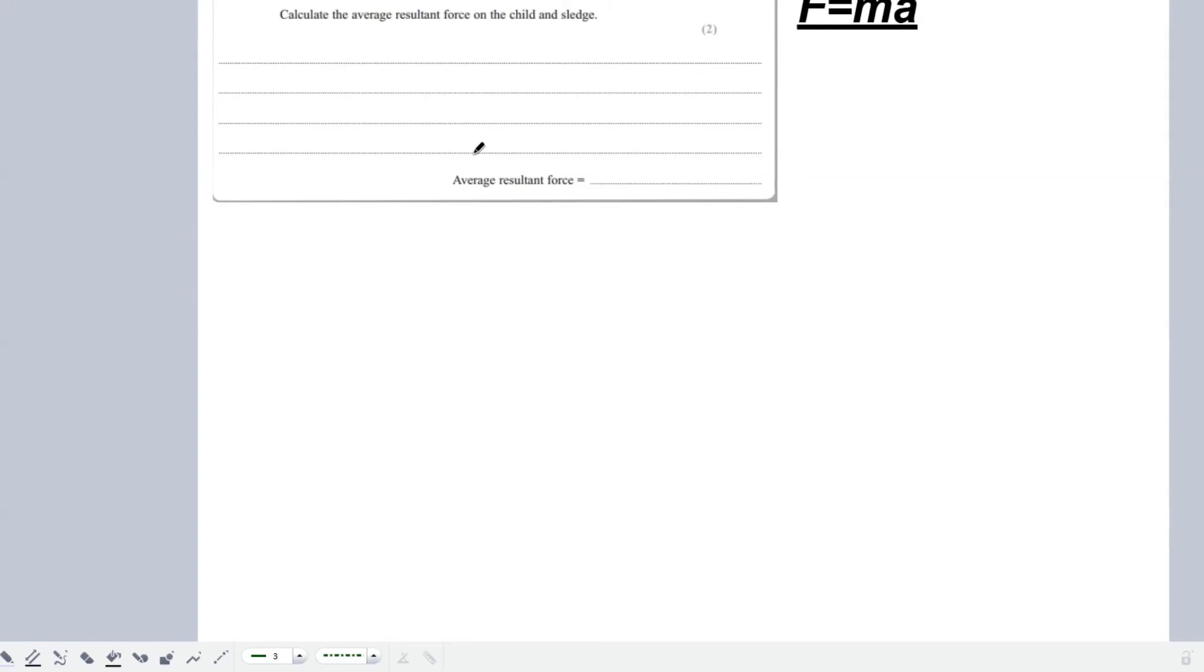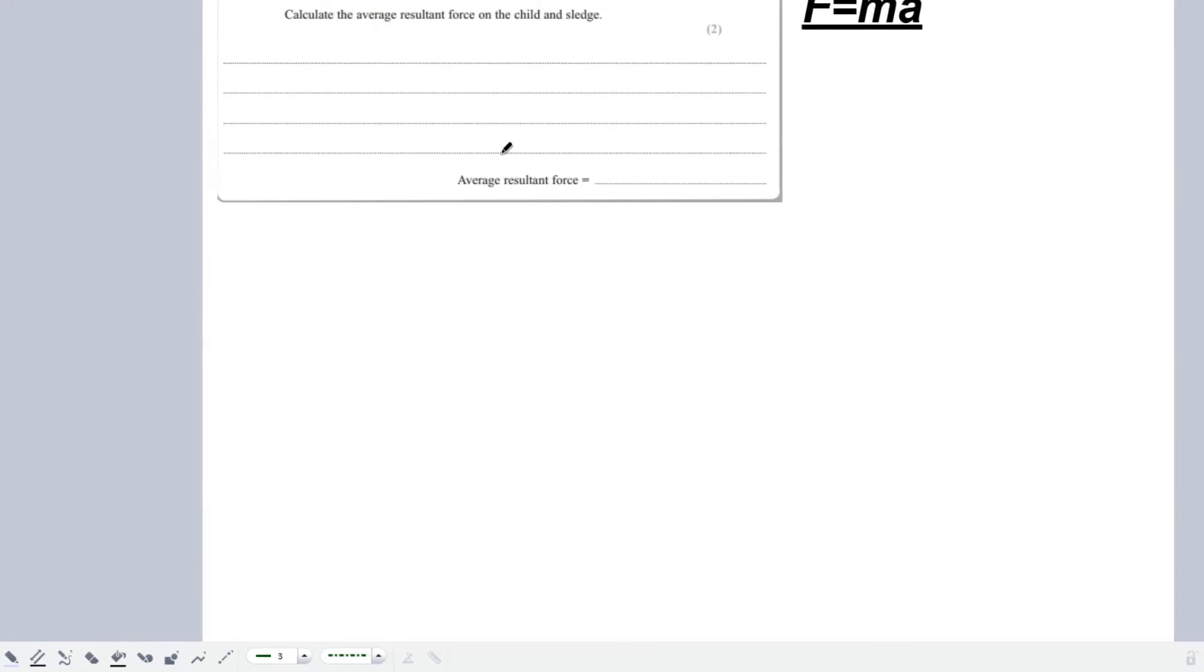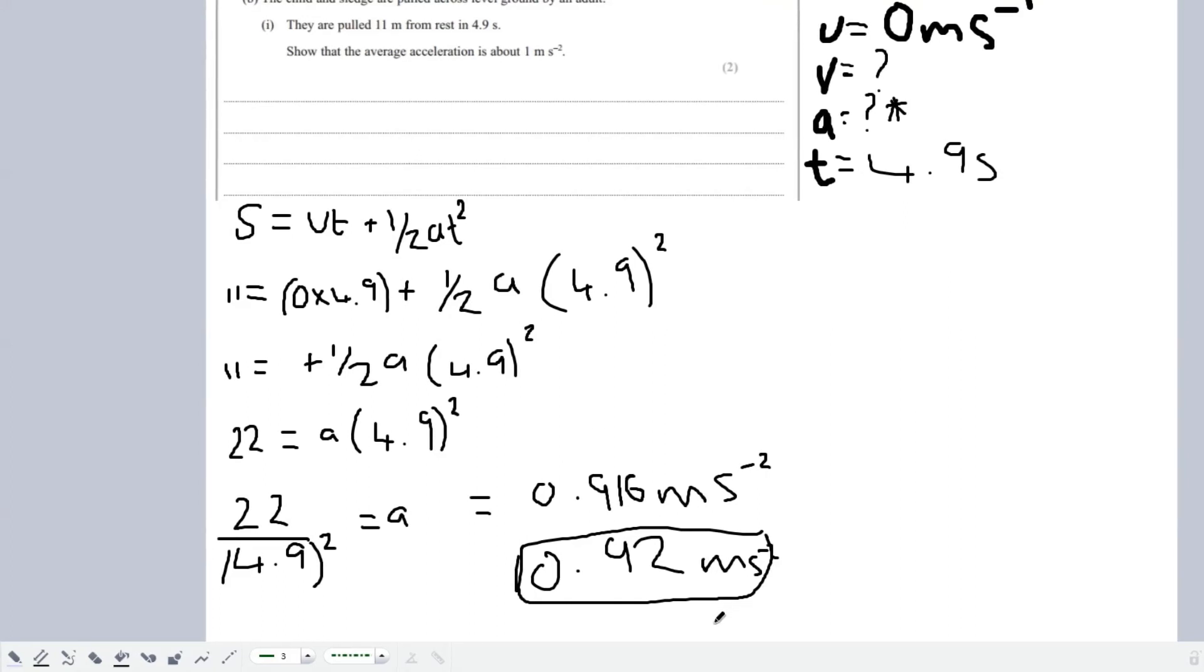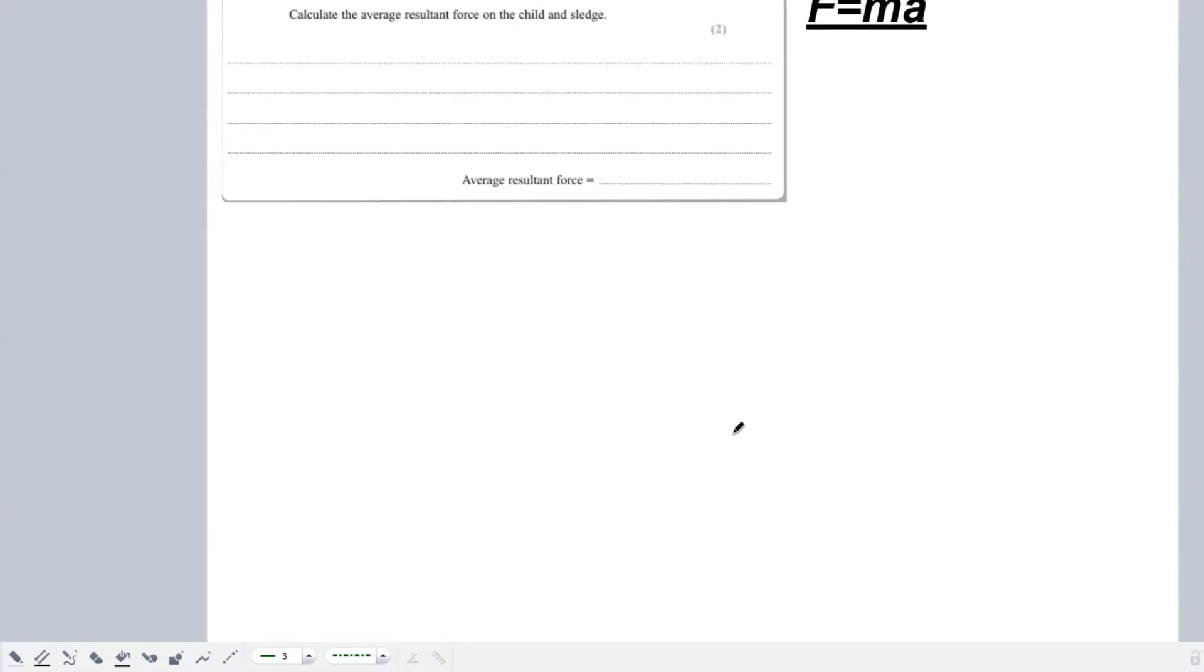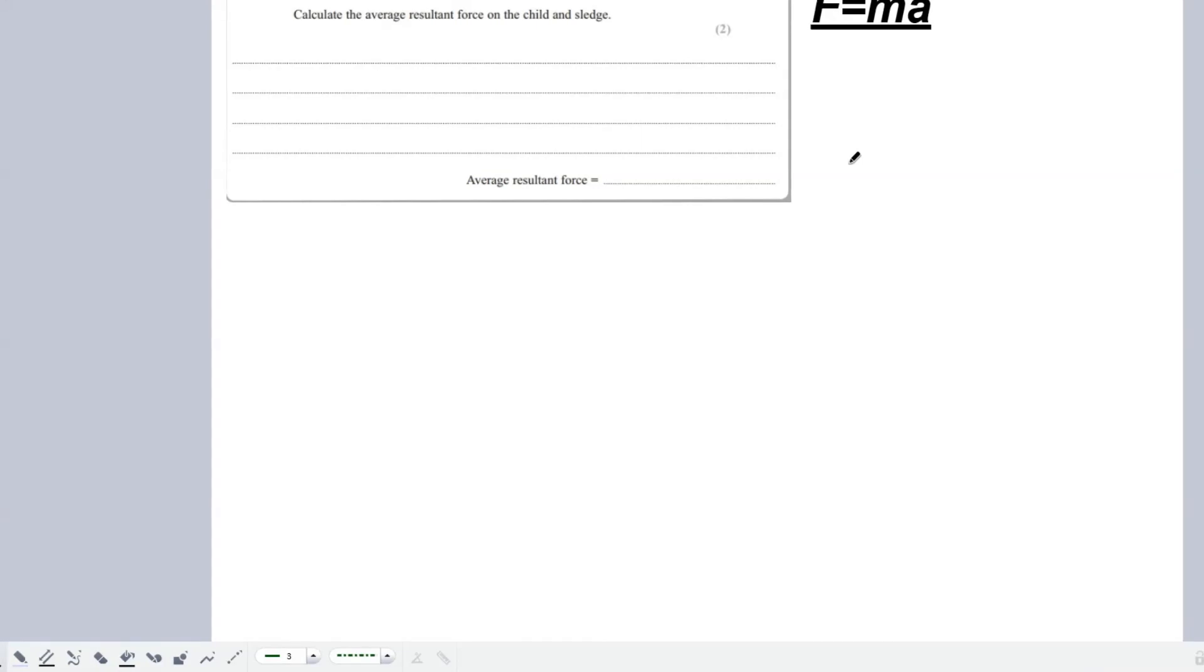The next question talks about the child and the sled having a combined mass of 40 kilograms. It wants us to find the average resultant force of the child and the sled. Initially, this seems like a bit of a weird question you might not know how to start, but we need to make sure we incorporate the previous part of the question. I'm sure you all know the equation F equals ma. It's a pretty standard equation, pretty easy to use.